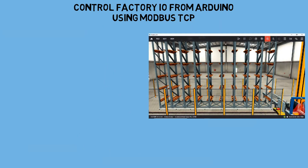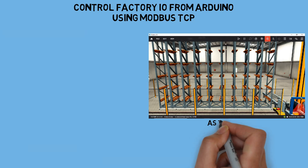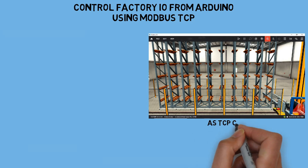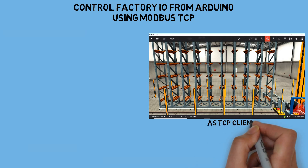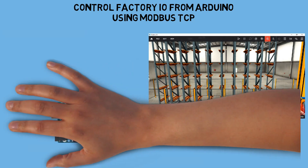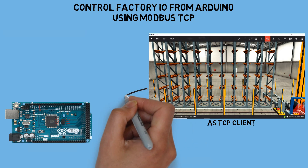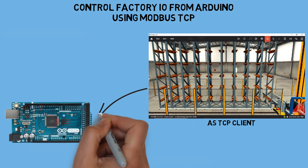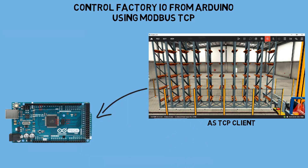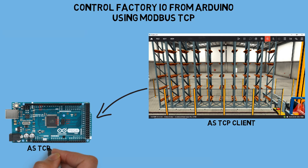In Factory IO software, open the automated warehouse scene, then set the driver as TCP/IP client. Connect to Arduino Mega using Ethernet connection, and configure the Arduino as TCP/IP server.